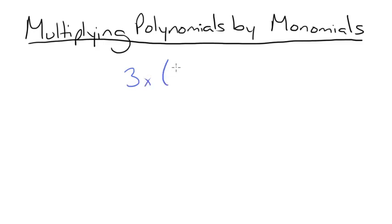3x times 4x plus 2. When multiplying a polynomial by a monomial, you'll want to multiply each part of the polynomial, which is this part right here, by each part of the monomial, which is this part right here.